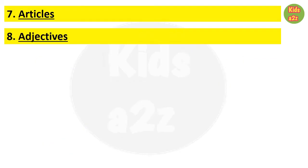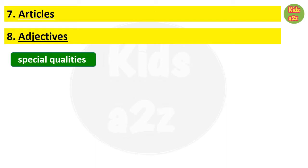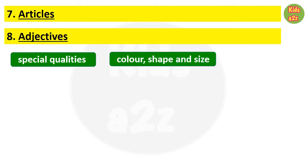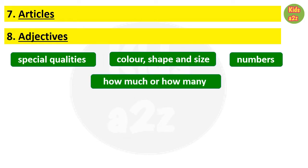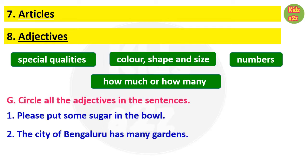A separate video on articles is also available in the channel — please check the description box for the link. The next topic is adjectives. Adjectives describe nouns — they tell us about the special qualities, color, shape, and size of a noun. Numbers are also adjectives. Adjectives can tell us how much or how many things there are.